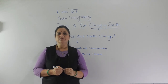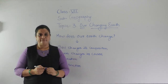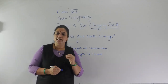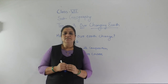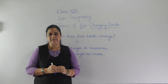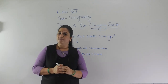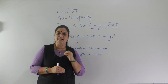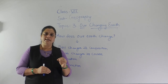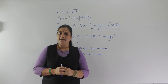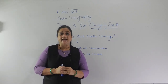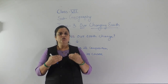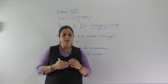In the last lecture we studied about the interior of the earth, in which we studied about the different layers. The crust is the outermost layer, the surface on which we live, which is called the lithosphere. Below the crust, the second layer is the mantle, and hot molten magma is in the mantle layer. There are changes in the interior of the earth which are responsible for the changes on the earth's surface.